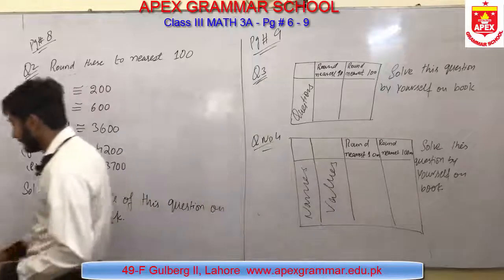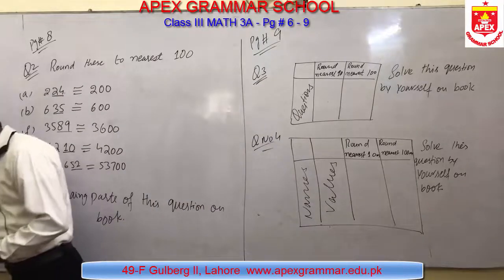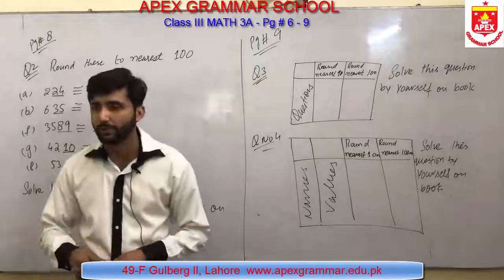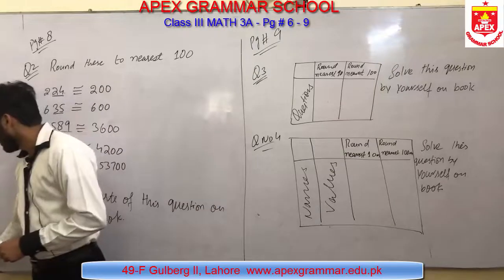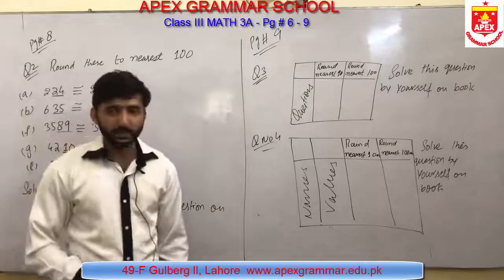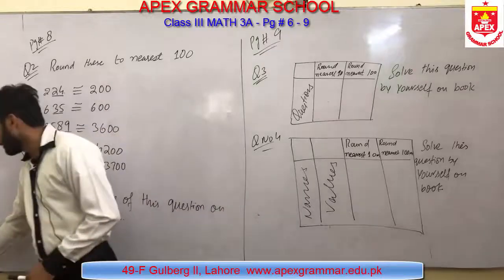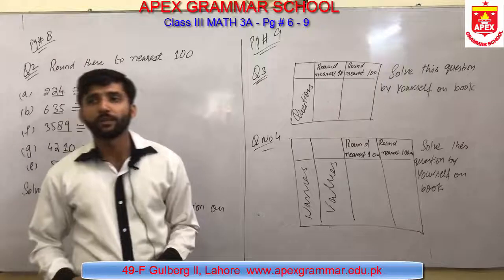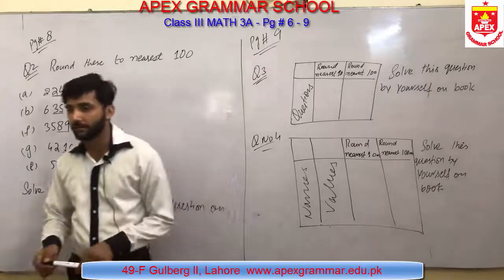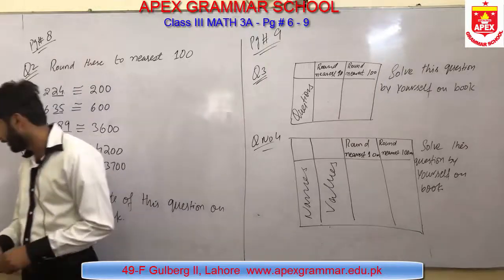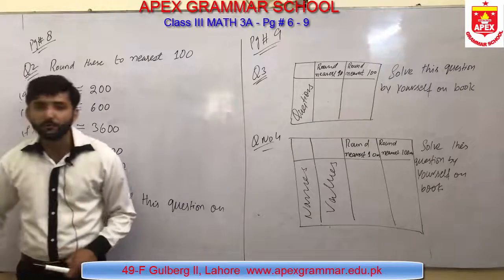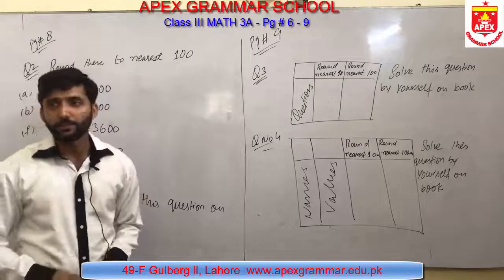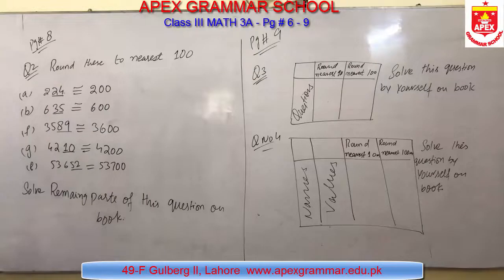Today we have learned how to compare two numbers and how to compare more than two numbers, how to arrange three or more values in increasing order, how to round a number to the nearest 10, and how to round a number to the nearest 100. I hope you have understood clearly. Solve the questions I have given you by yourself on your book. Thank you.